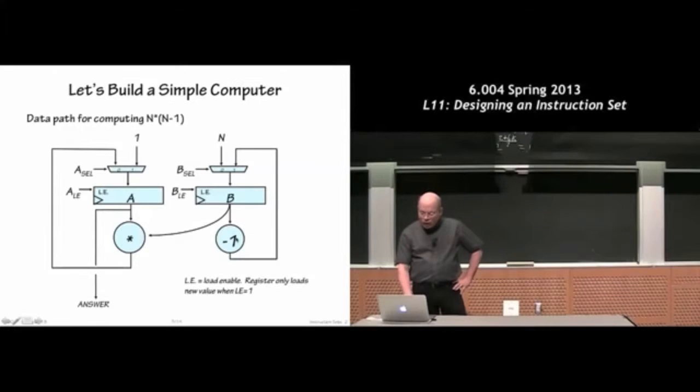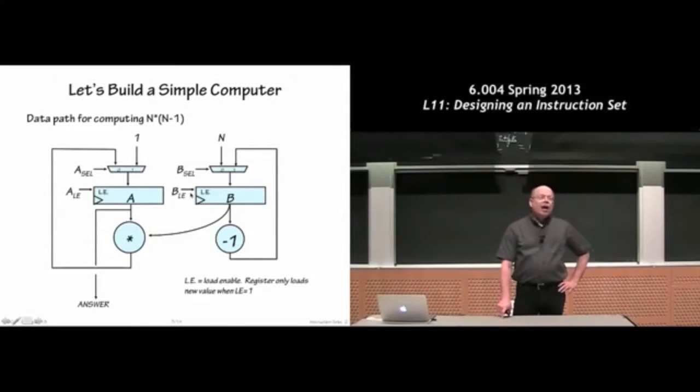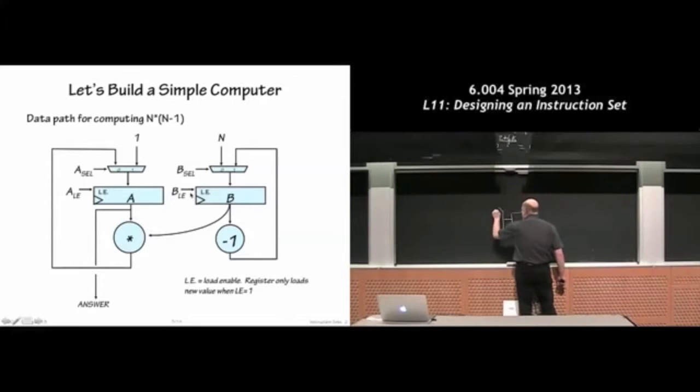Here's a unit that subtracts one. These are two what we call load-enabled registers. You can see that in addition to a data input, a queue output, and a clock input, they have a separate input called LE, which stands for load-enabled. And when that signal is high, we actually load a value into the register, a new value. And when the signal is low, we load an old value. The registered value doesn't change. We're actually loading the register all the time.